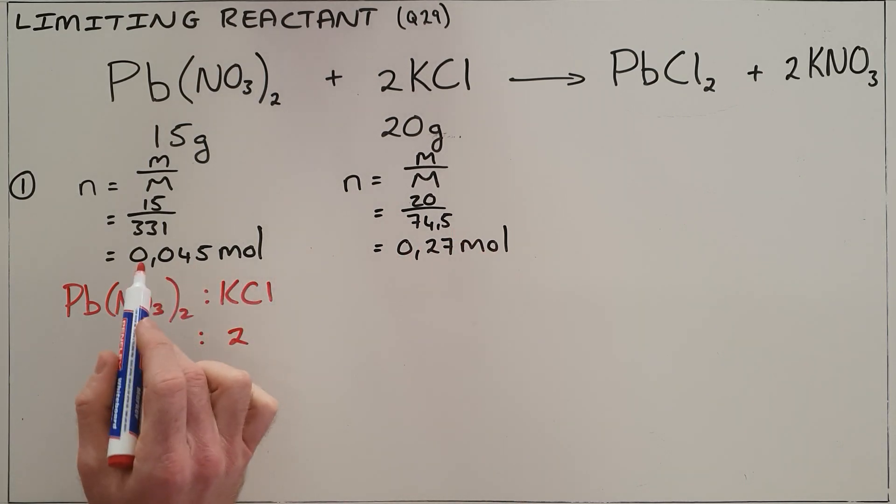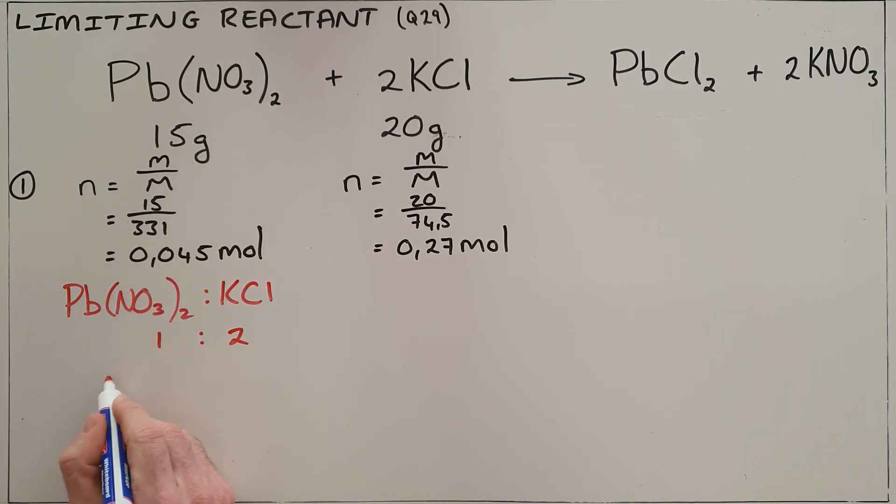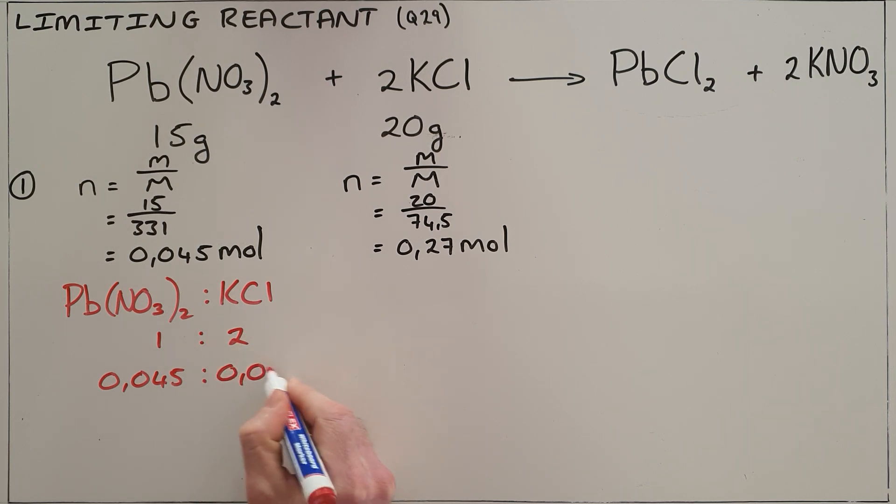We can say let us assume that the lead nitrate is the limiting reactant, in which case we would use up all of the lead nitrate. Then the question is how much potassium chloride would we need? We can do that by using the ratio here, multiply by two, to find that we would need 0.09 moles of potassium chloride.